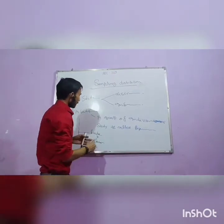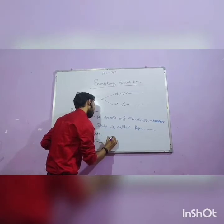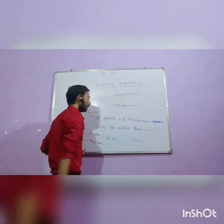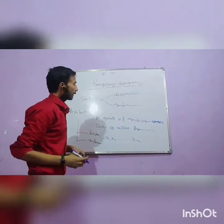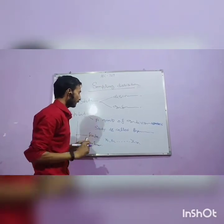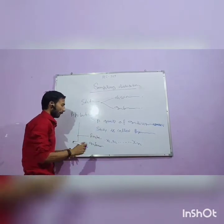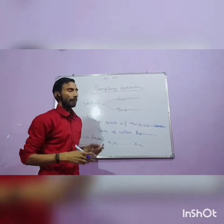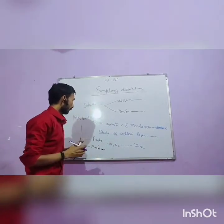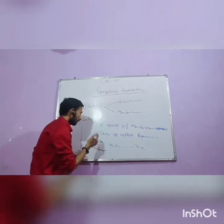Finite population is written in the form x1, x2, dot dot dot, xN. For example, we want to measure the average marks of 100 students in a class — that is an example of finite population. An example of infinite population: if we want to average the distance of different stars in the sky, that is known as infinite population.